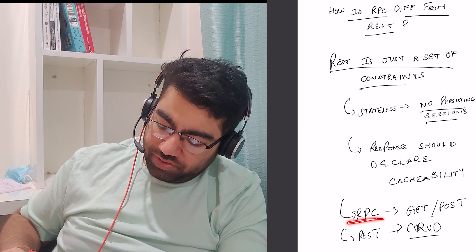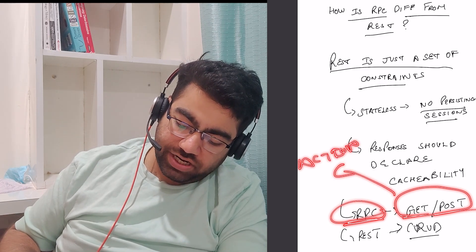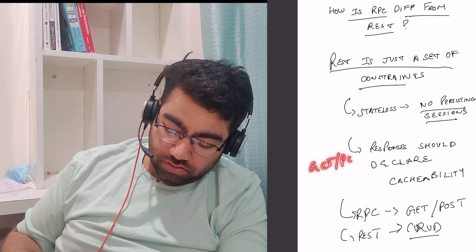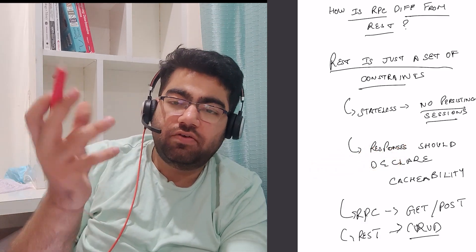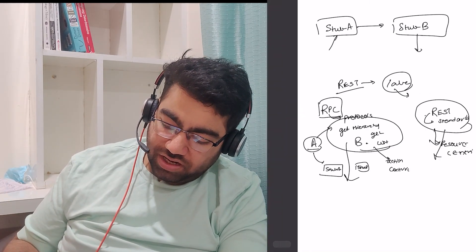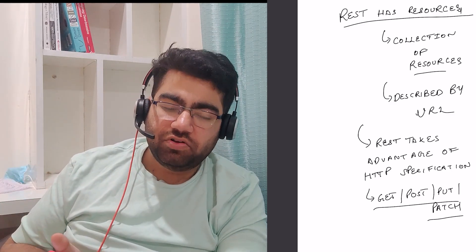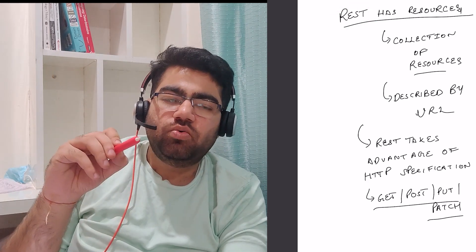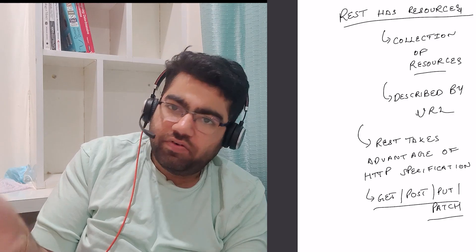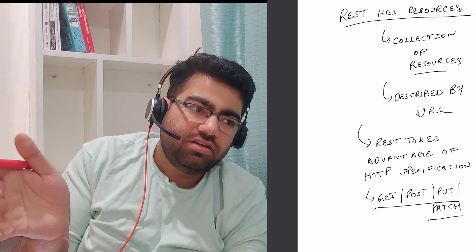REST is a set of constraints — it should be stateless, responses should declare cache-ability, and so on. Similarly, RPC has its own constraints. In RPC there are just two types of API calls — GET and POST — showing it is mostly focused on the action and not the data. REST supports all CRUD operations: GET, POST, PUT, and DELETE, showing it focuses on the resource. Internally, both use HTTP or TCP to make calls — they are both just API constructs. An API adhering to REST constraints is a REST API; one adhering to RPC constraints is an RPC API, but there is no difference in how the call is actually made.